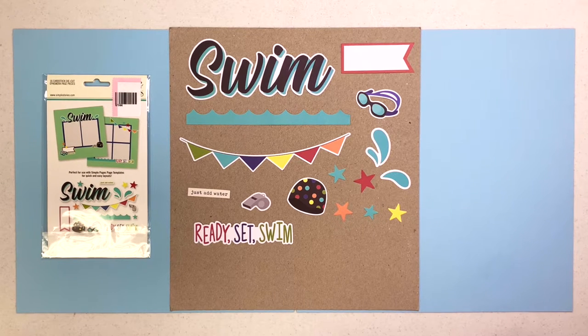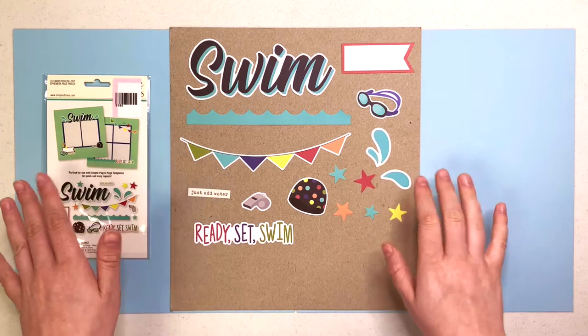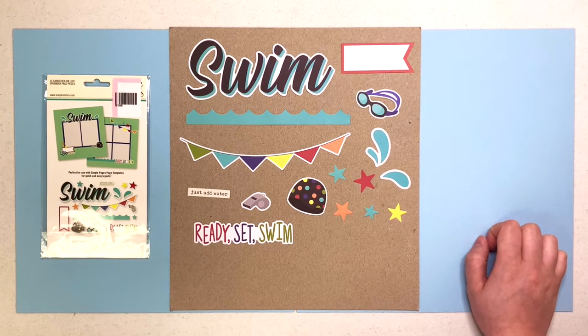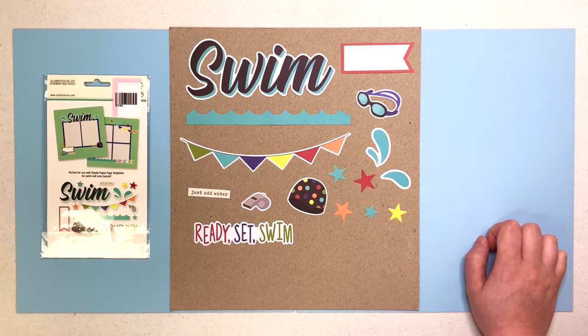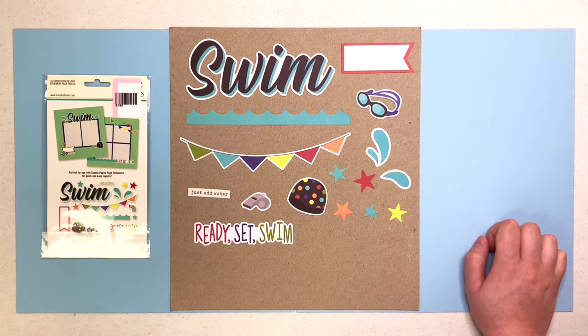I am so excited today. I picked out the swim page pieces set. This is what it looks like. There are 16 cardstock die cut pieces in this page pieces set. Technically this set is part of the sports section, so this is like swimming as a high school sport or as a professional sport.